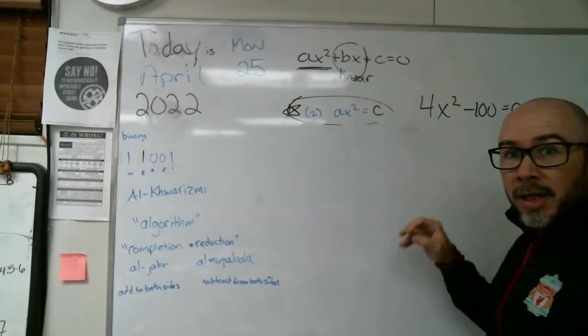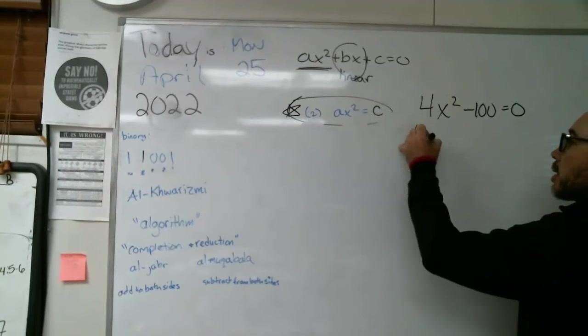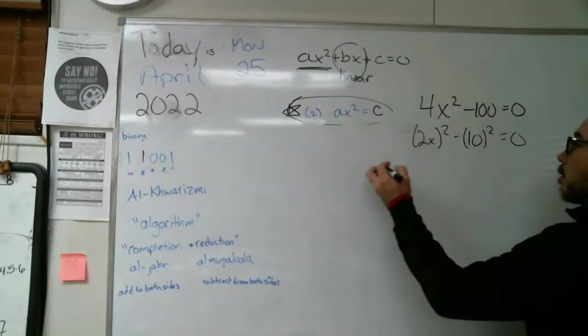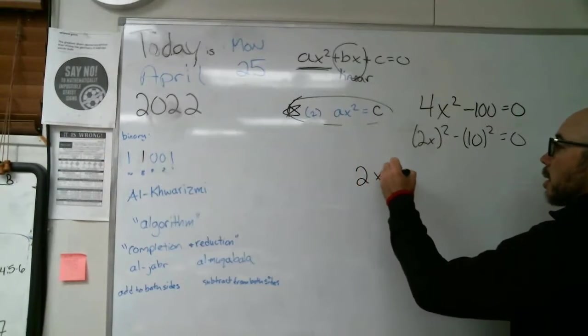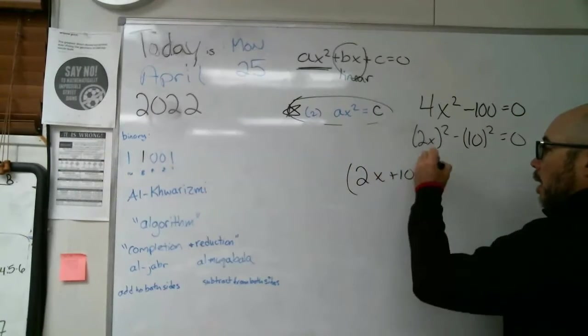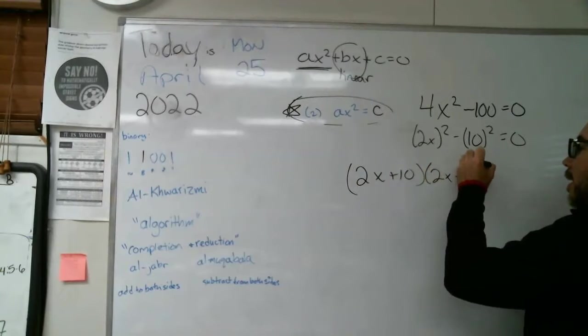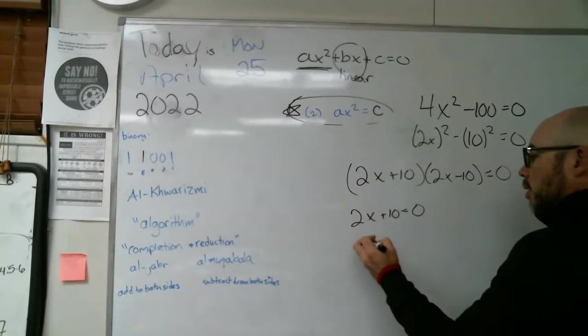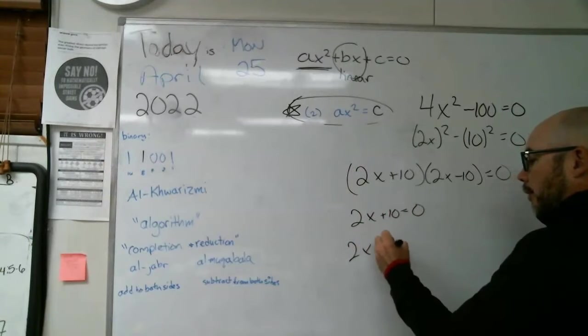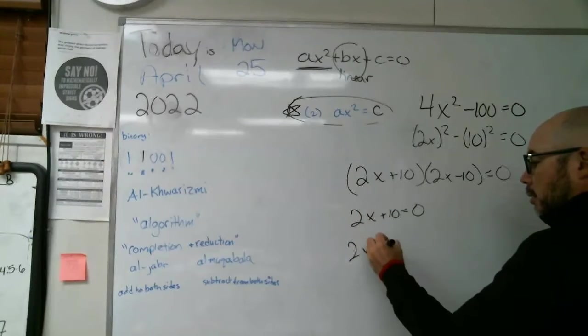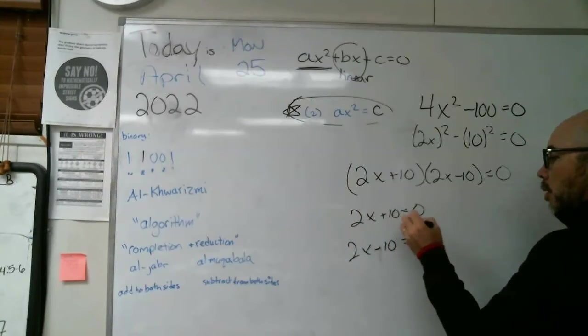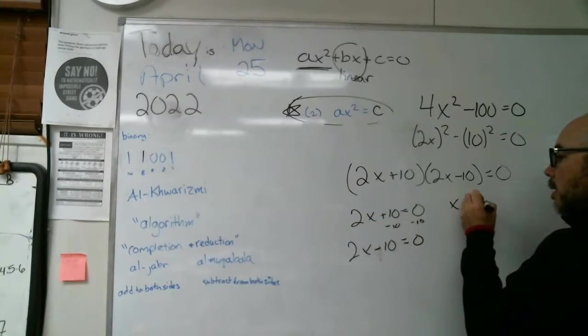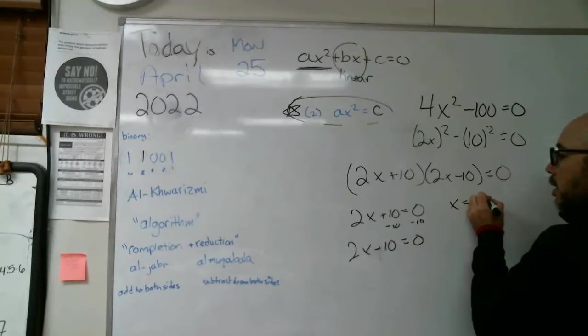Here's another one where it's already set up as the difference of two squares. This is 2x squared minus 10 squared. So you could say, well, that's 2x plus 10 and 2x minus 10. And we could set each of those to zero and solve.